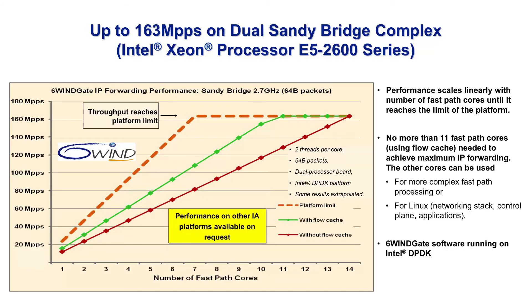From the customer application, 6Wind creates an abstraction layer which allows the use of any of these devices. By leveraging the DPDK, 6Wind Gate delivers the highest available packet processing performance on Intel Xeon platforms. For example, with two 2.7 GHz Sandy Bridge processors, 6Wind Gate achieves IP forwarding performance of 146 million packets per second, and can deliver 73 gigabits per second of IPsec on the same platform.